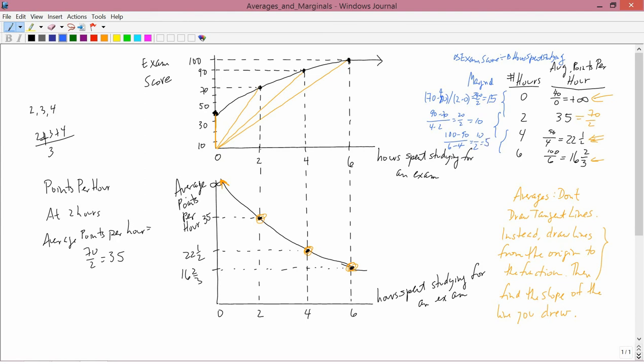So those would be our three marginal numbers: 15, 10, and 5. But we need a graphical interpretation. We'll actually be able to get four of them. We're going to draw tangent lines.